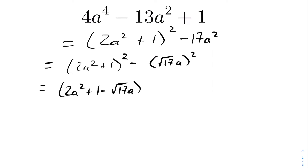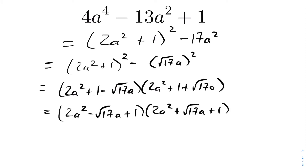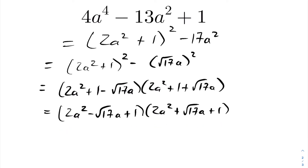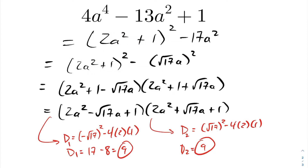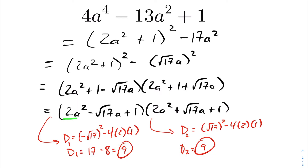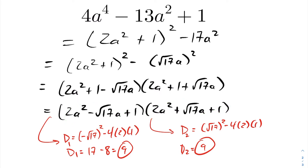We replace 17a squared with root 17 times a, quantity squared, giving a difference of squares. This factors as 2a squared plus 1 minus root 17 times a, times 2a squared plus 1 plus root 17 times a — rearranged as two quadratics. A discriminant check on each gives 9 for both, indicating real but irrational roots, since the coefficient b is itself irrational. We typically leave the factoring here and use the quadratic formula for the roots.